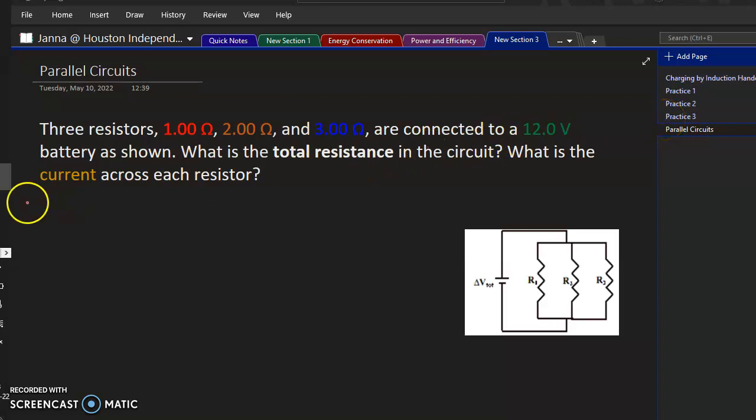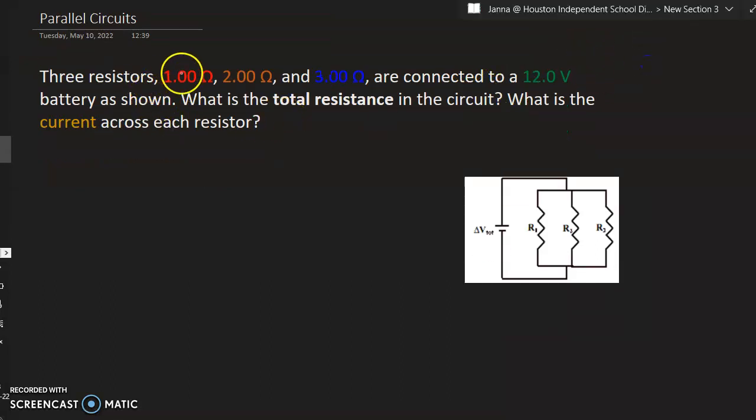All right, if you're absent from the day that we did the parallel circuits, this video is for you. We have three resistors, 1 ohms, 2 ohms, and 3 ohms, are connected to a 12-volt battery as shown. These are in parallel.